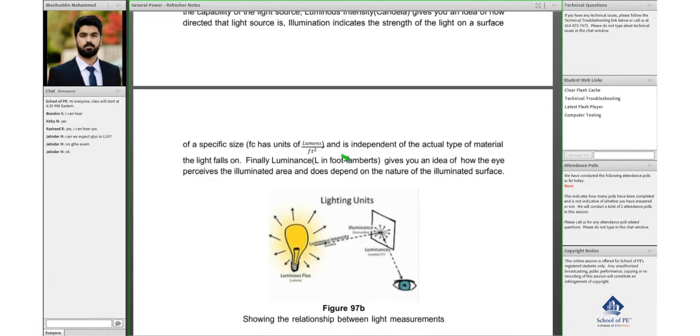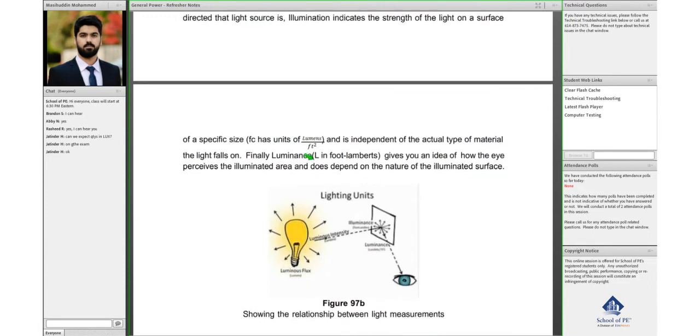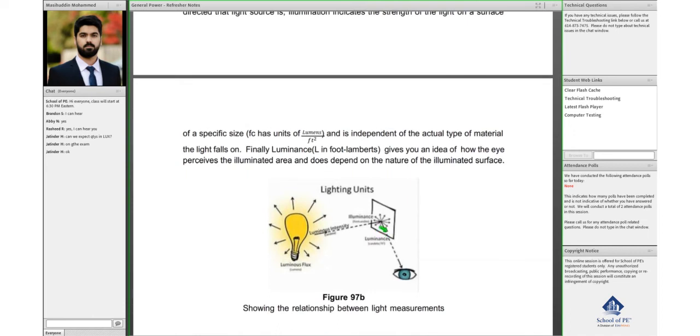Luminance, which is usually given in foot Lambert, that's the unit, represented by L. That's how much light is being perceived by an eye on a surface.